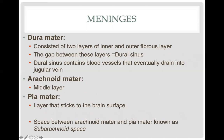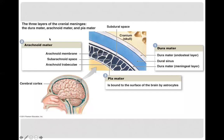The innermost lining of the brain is a very thin, glossy-looking layer that literally sticks to the surface of the brain — that layer is the pia mater. The space between your arachnoid mater and your pia mater is called the subarachnoid space, which is where your CSF or cerebrospinal fluid collects.